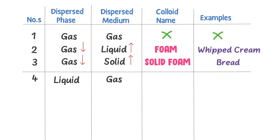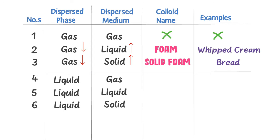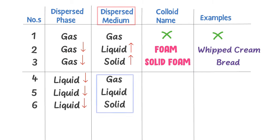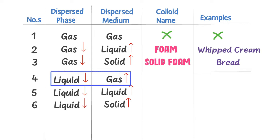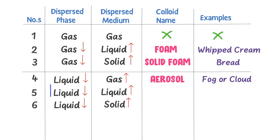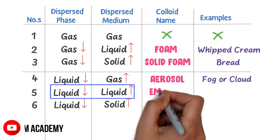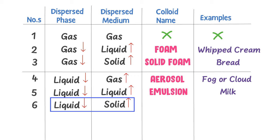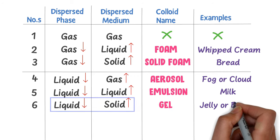The fourth type is liquid and gas, the fifth is liquid and liquid, and the sixth is liquid and solid. In this category, liquids are the dispersed phase in smaller proportion, while gas, liquid, and solid are the dispersed medium in larger proportion. The name of liquid and gas colloid is aerosol, and its example is fog or cloud. The name of liquid and liquid colloid is emulsion, and its example is milk. The name of liquid and solid colloid is gel, and its example is jelly or butter.